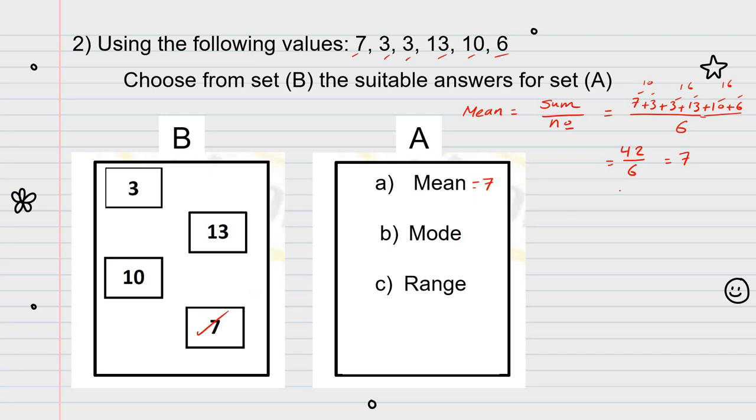What about the mode? Mode means the most repeated number. Mode means most repeated number. What is the most repeated number here? Yes, it's 3. So, the mode here is 3.